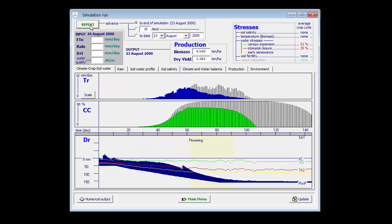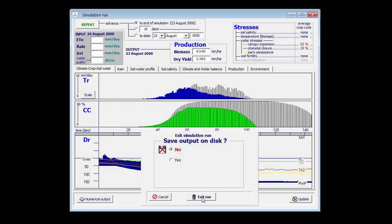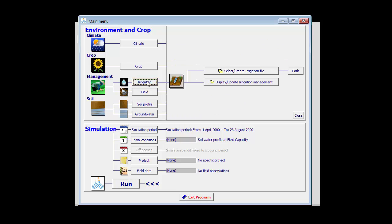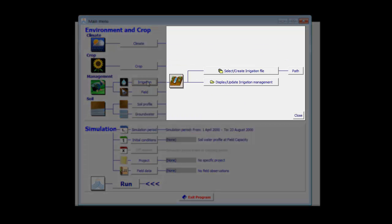So there is need to irrigate. Now AquaCrop can determine the amount of net irrigation requirements. Therefore, I return to the main menu and I click on the irrigation button. By clicking on it, I open the file management menu where I can select an irrigation file or I can change, update the irrigation setting.